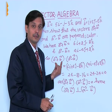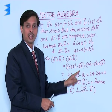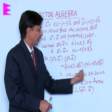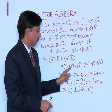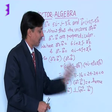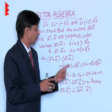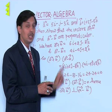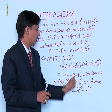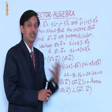We compute (A+B) · (A−B): that is (6i + 2j − 8k) · (4i − 4j + 2k). Multiplying like components: i with i gives 6×4 = 24, j with j gives 2×(−4) = −8, and k with k gives (−8)×2 = −16. So the result is 24 minus 8 minus 16, which equals 0.